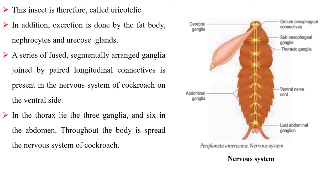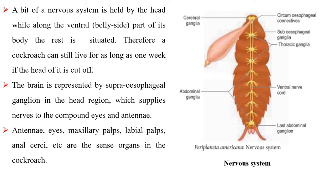In addition, excretion is done by the fat body, nephrocytes and uricose glands. A series of fused, segmentally arranged ganglia joined by paired longitudinal connectives is present in the nervous system of cockroach on the ventral side. In the thorax lie three ganglia and six in the abdomen. Throughout the body is spread the nervous system of cockroach.